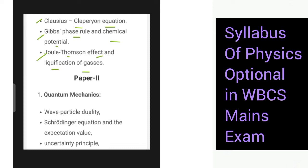Now we are moving over to Paper 2. In Paper 2 we have quantum mechanics: wave-particle duality, then Schrödinger equation and the expectation values, uncertainty principle.